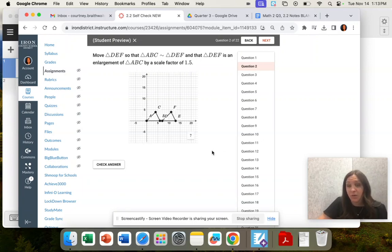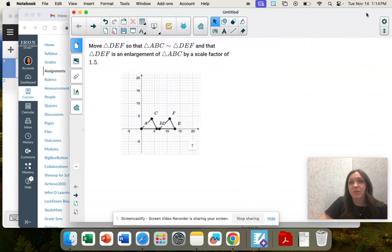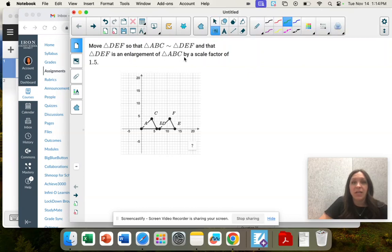This is really a question that we've already done in unit one. We're taking this triangle and dilating it by a scale factor of 1.5, and they're similar because the angles won't change.